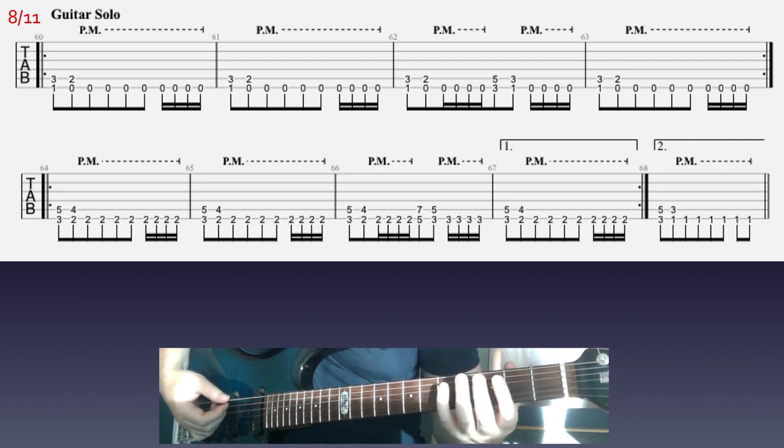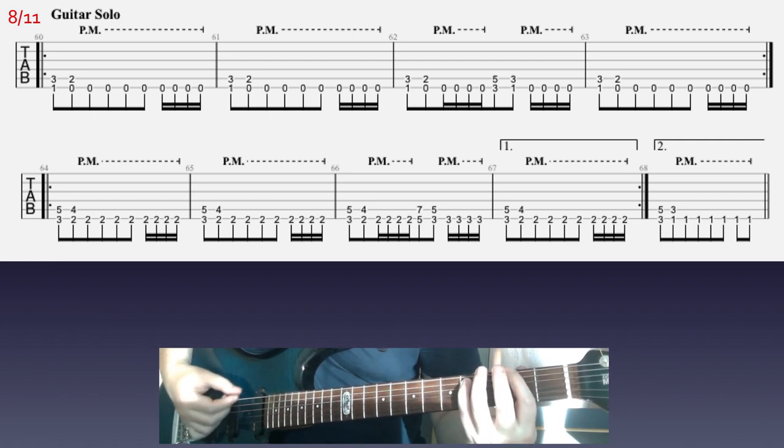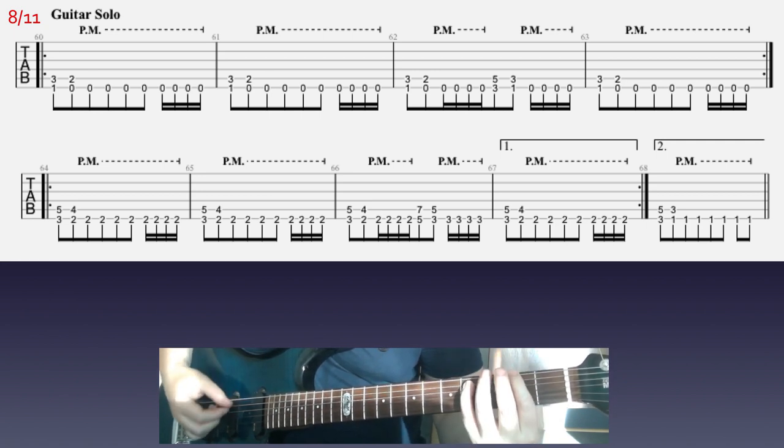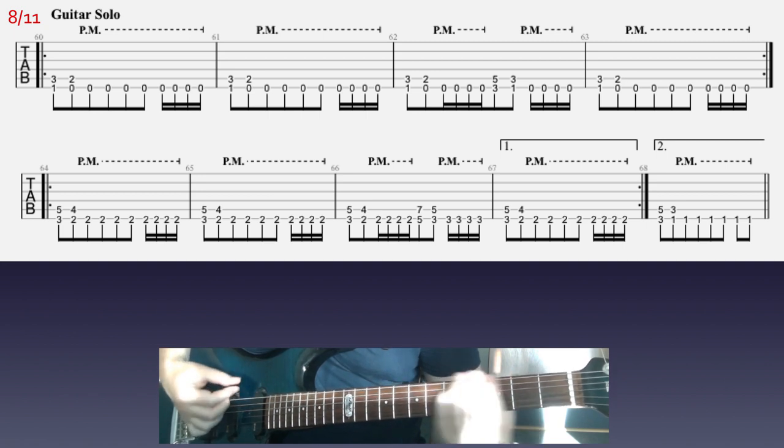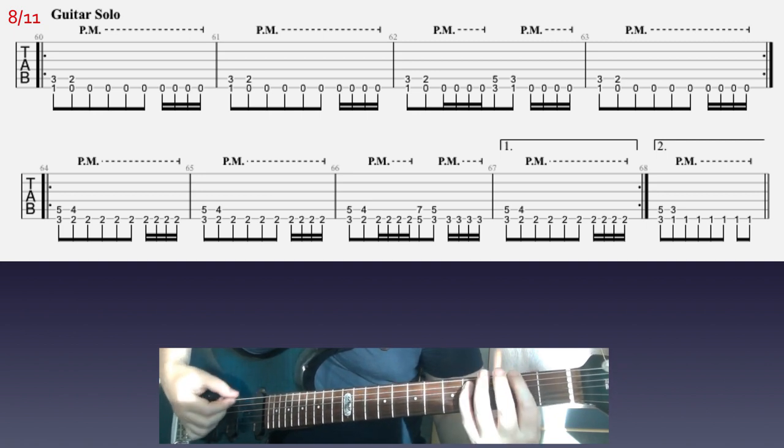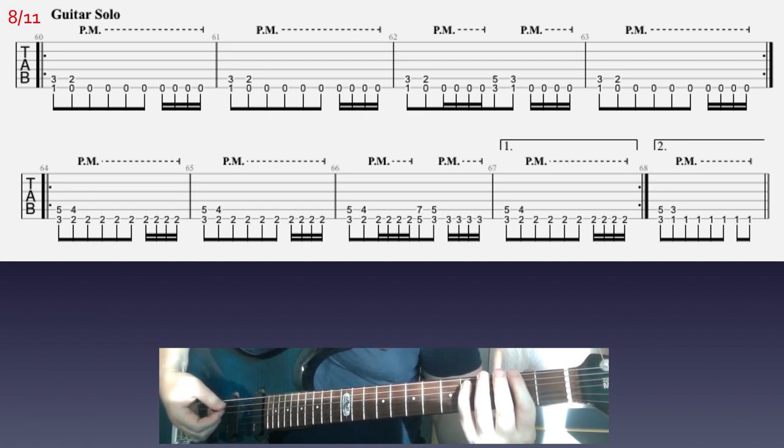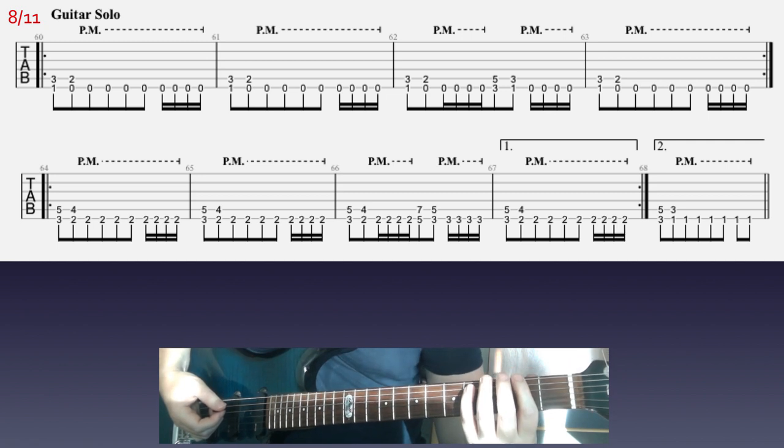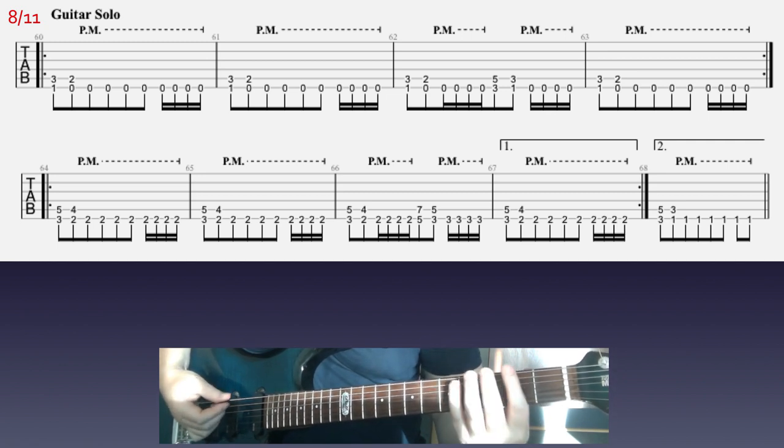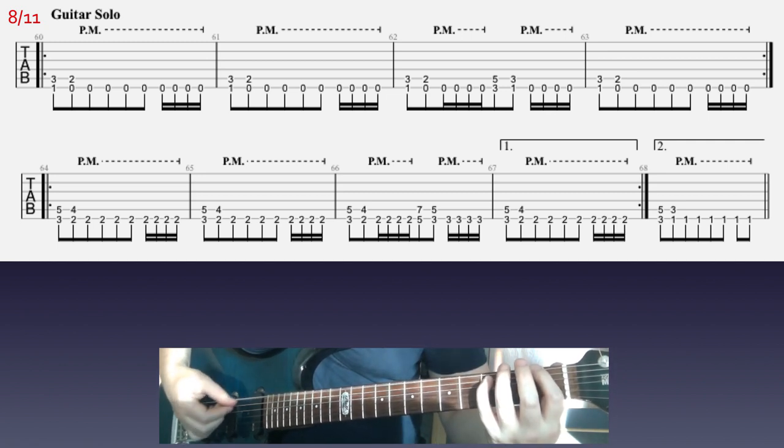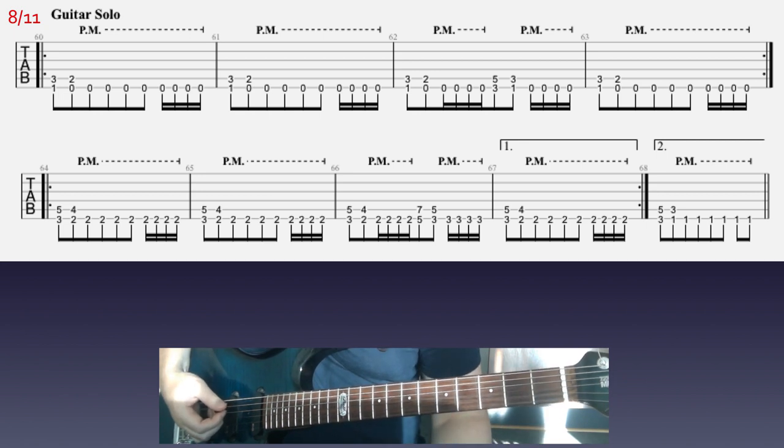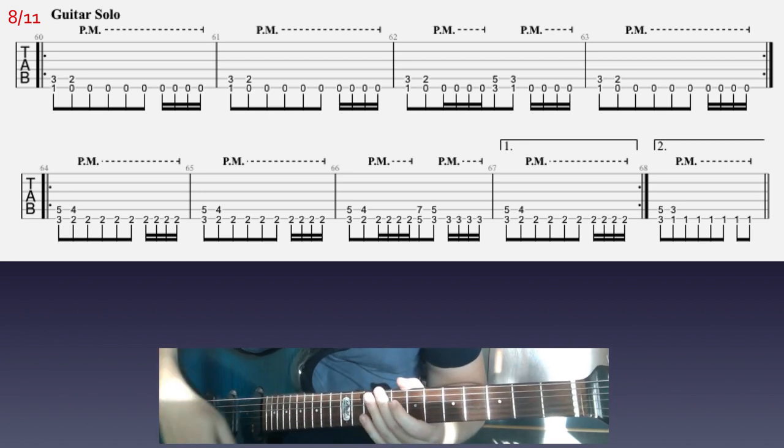The second line is a little bit about the same but you're gonna play it two frets higher up. Then you're gonna repeat it one more time but you're gonna end it on the final bar instead of the fourth bar. That would be the second ending.